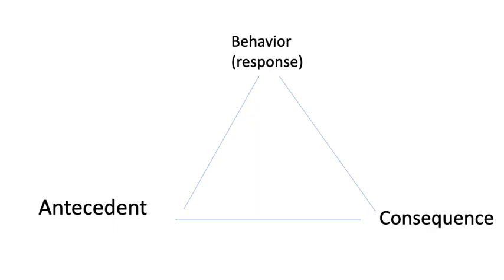Another topic we will cover is what ABCs are in terms of early childhood special education. We will talk about the antecedent, which is A, the behavior, which is B, and the consequence, which is C. In the next slide we will take a look at each element.